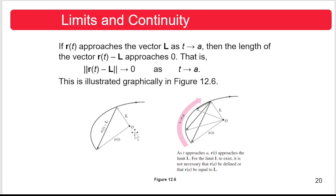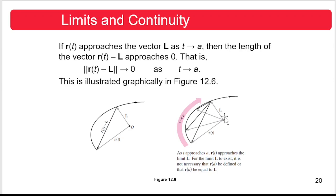As you can see in this illustration, given the vector-valued function r(t) and the vector L, if r(t) approaches L as t approaches a, then the length of r(t) minus L approaches zero — that is, |r(t) − L| approaches zero as t approaches a. This indicates that as t approaches a, r(t) approaches the limit L. For the limit L to exist, it is not necessary that r(a) be defined or that r(a) equal L.